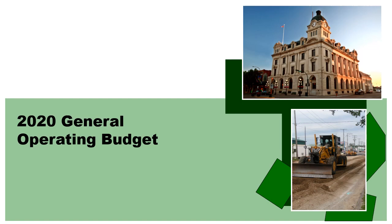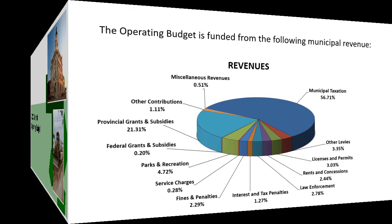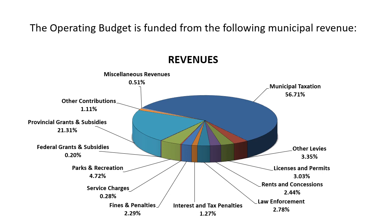I'd like to start with the 2020 general operating budget. This chart gives you an overview of the revenues. You can see some of the major revenue areas. Municipal taxation is about 57% of our budget — by far the largest revenue source. Provincial grants and subsidies is about 21.3%. Add those together, that's almost 80% of our revenues. I wanted to speak a little bit about the municipal tax levy since it plays such a large role in our overall revenues.